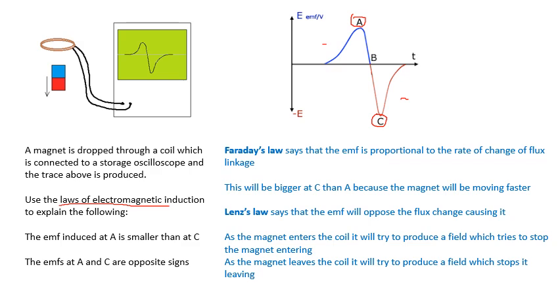So Faraday's law, first of all, say what it is. Faraday's law says that the EMF is proportional to the rate of change of flux linkage. Therefore, you're going to get a bigger EMF at C. Why? Because the magnet is moving faster. Because it's fallen due to, it's accelerated due to gravity. The magnet is moving faster. The rate of flux cutting will be bigger. You'll get a bigger EMF.